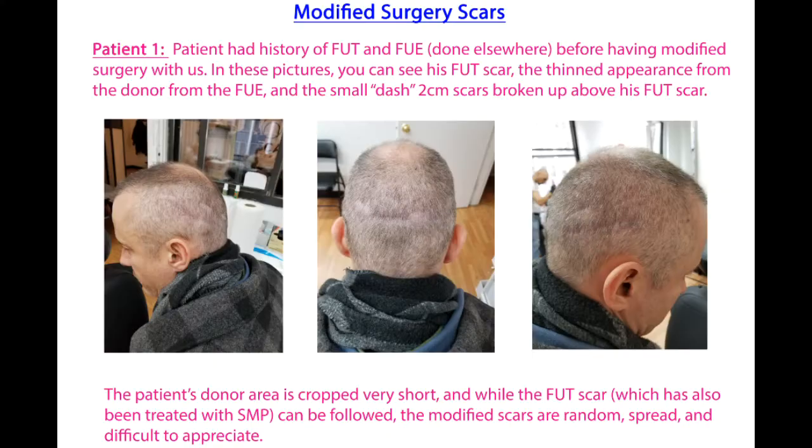Some offices also offer a third procedure called the modified FUT procedure. For this method, instead of taking out the follicles one by one as in FUE, or taking out a long strip as in FUT, they take mini strips two to three centimeters in size, so instead of one long linear scar there are four or five small dash scars. This method gives the benefits of FUT while making it easier to wear shorter hairstyles.